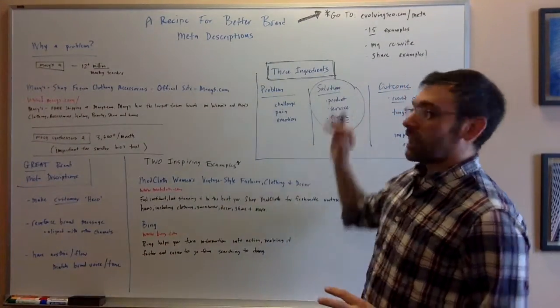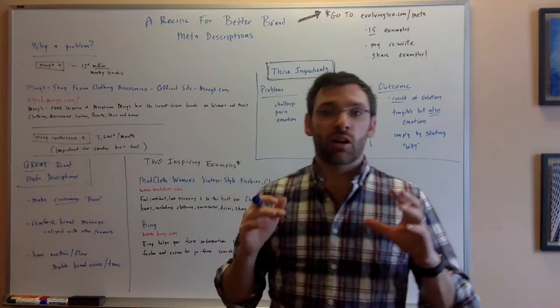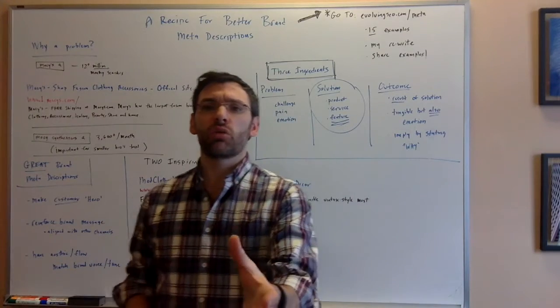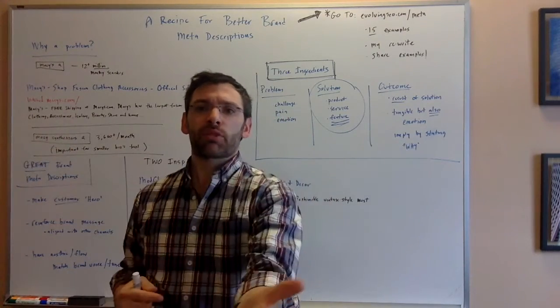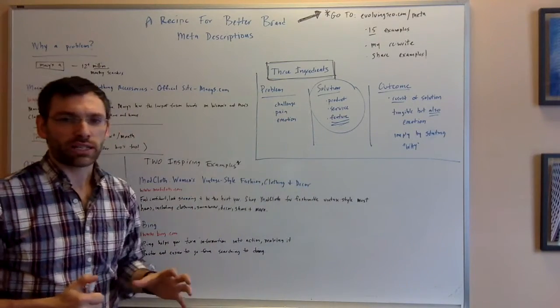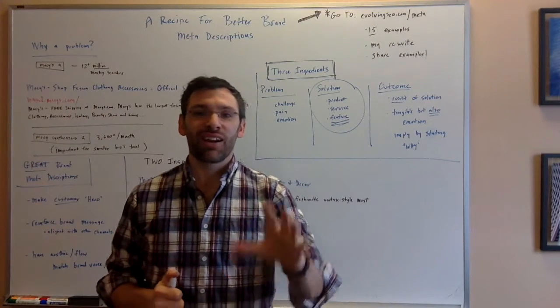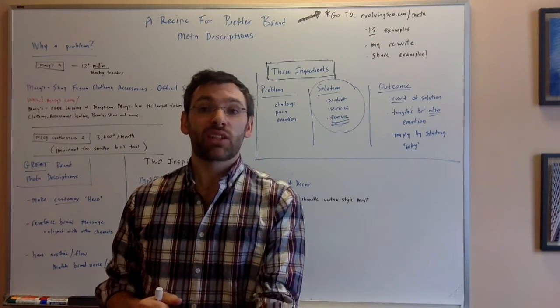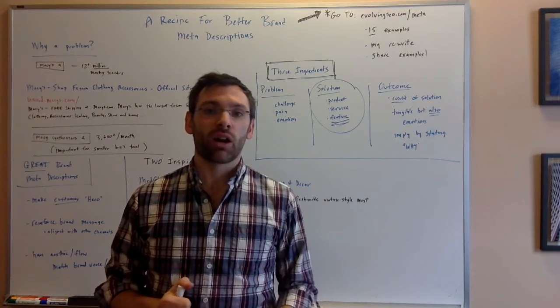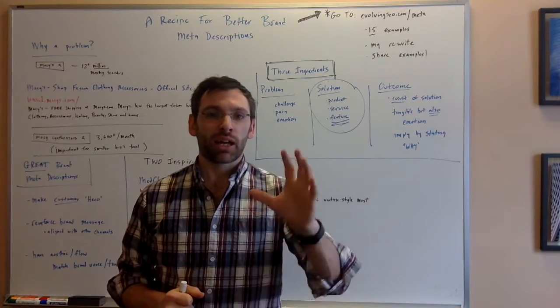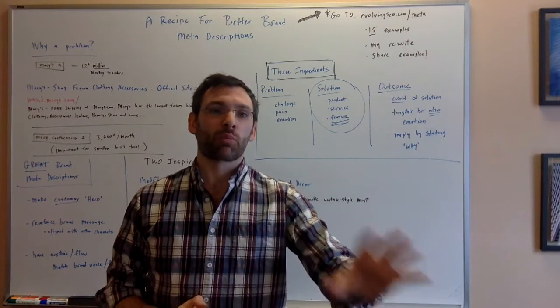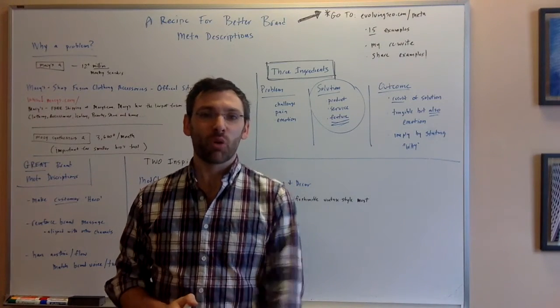So again, you can go to evolvingseo.com/meta to find all of the 15 examples. I also want to encourage you if you're watching down below to share examples of meta descriptions that you love that you think are great that you think hit all three of these points here. And you can also see where I'm going to share the example of I rewrote evolving SEO's homepage meta description. I'm going to share it on that page as well on that URL. And I encourage everyone to let me know what you think. I hope this was helpful. Get out there and write better meta descriptions, make a better impression on your brand and make your customers love you even more. Thanks for watching.